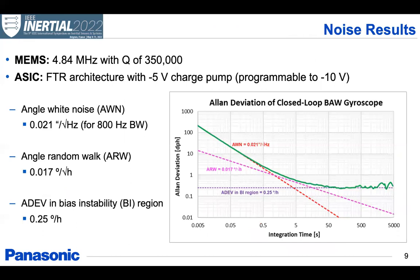Here are some of the noise results for a device at 4.8 megahertz with a quality factor of 350,000 utilizing our force to rebalance architecture and a polarization voltage of minus five volts using the integrated charge pump in our ASIC. And here we can see that the device has an angle white noise of 0.001 arc seconds per root hertz for an 800 hertz bandwidth, which is the bandwidth extension we get from the force-to-rebalance architecture, an angle random walk of 0.017 degrees per root hour, and an Allan deviation in the bias instability region of around 0.25 degrees per hour.